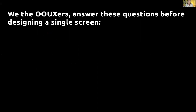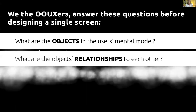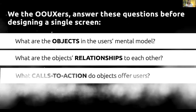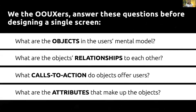The ORCA process: as an OUXer and system thinker, we want to answer these questions before we design screens. Before getting into UI, we ask: what are the objects of the user's mental model? What are the objects' relationships to each other? What are the calls to action users can take on these objects? What are the attributes that make up those objects? This aligns to ORCA — that stack of tools. There's a linear process, but we can remix it.